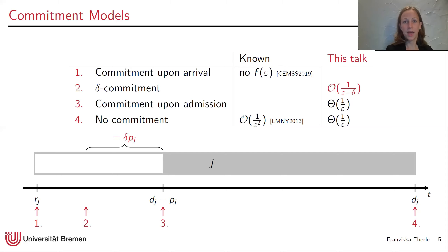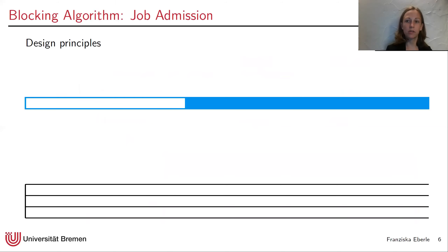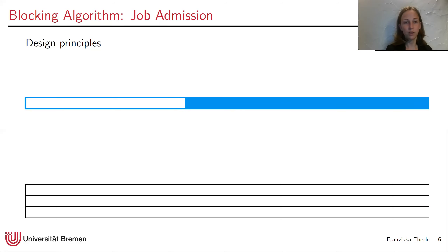So how do we achieve these competitive ratios? We developed one algorithm — called the blocking algorithm — and show it can be implemented with different parameters. Depending on the parameter settings, it is feasible in these three commitment models. During execution, it consists mainly of two parts: job admission and how to schedule the admitted jobs. Since these two parts are more or less independent, let's start with how to admit jobs.